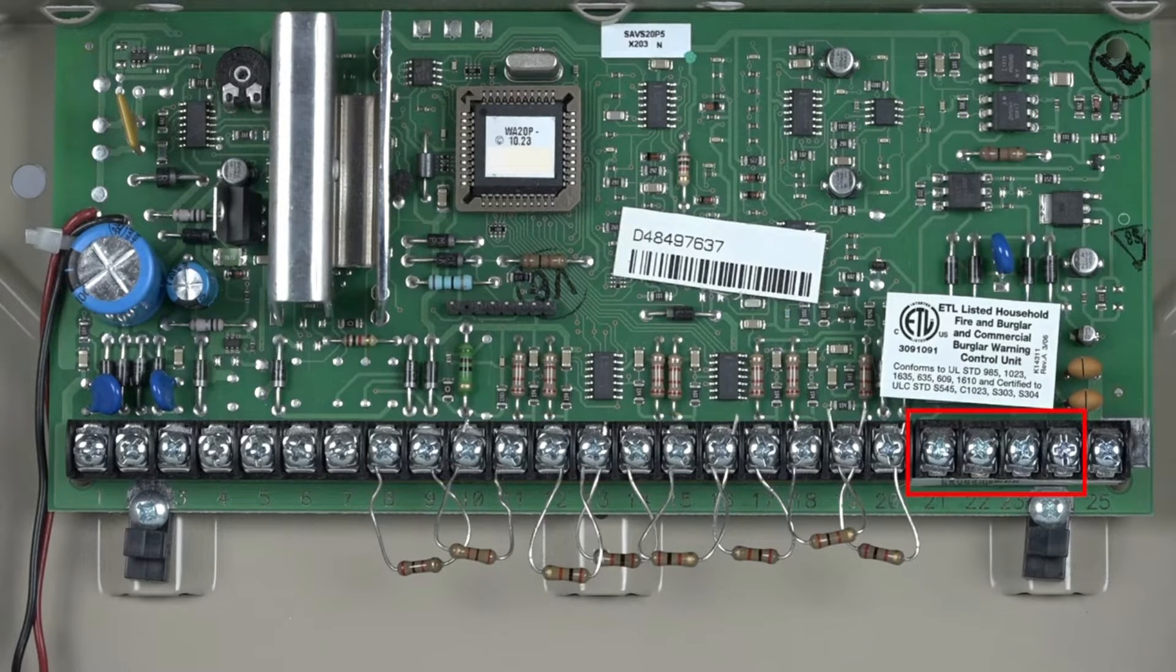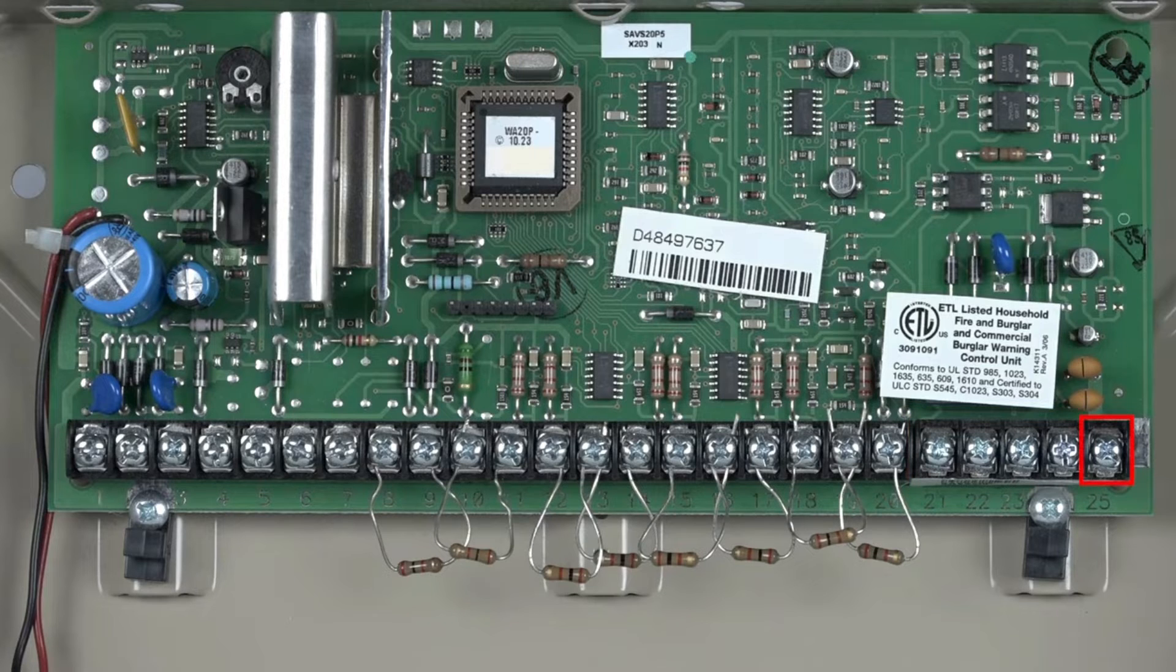Terminals 21 through 24 are for a phone line connection and Terminal 25 is an earth ground.